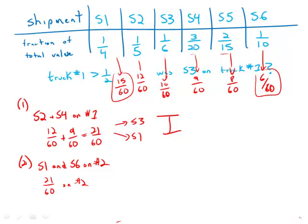And we have to have more than half, which is to say more than 30 out of 60 from the remainders on truck one. Well, let's just say that we don't include S3.